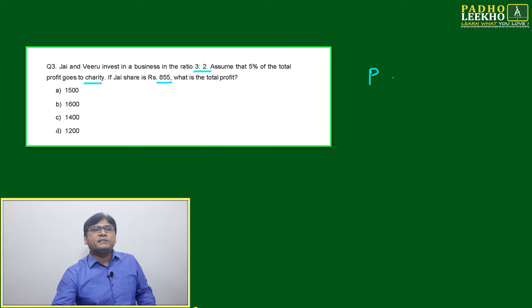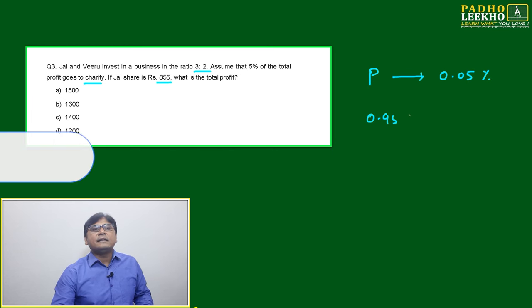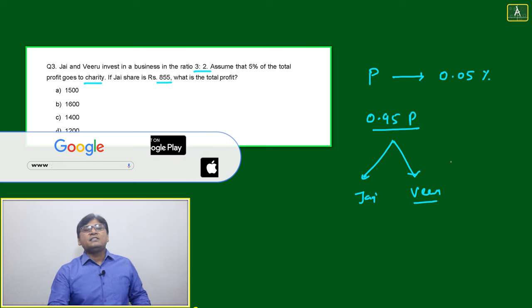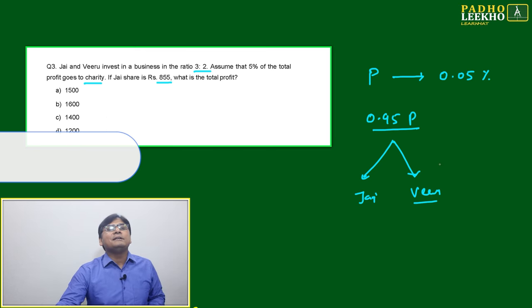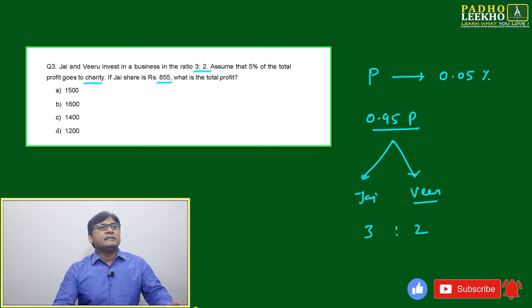What is happening here? If the total profit is P, then 0.05P goes to charity. The remaining effective balance will be 0.95P, which will be divided between Jay and Biru. This 0.95P will be divided between Jay and Biru in the ratio 3:2.